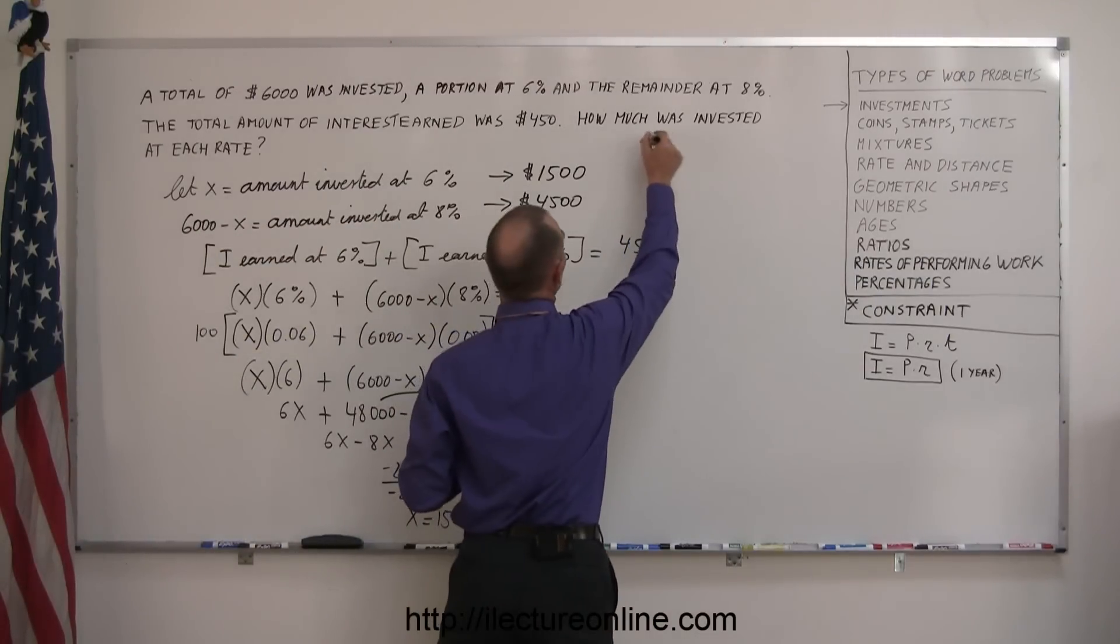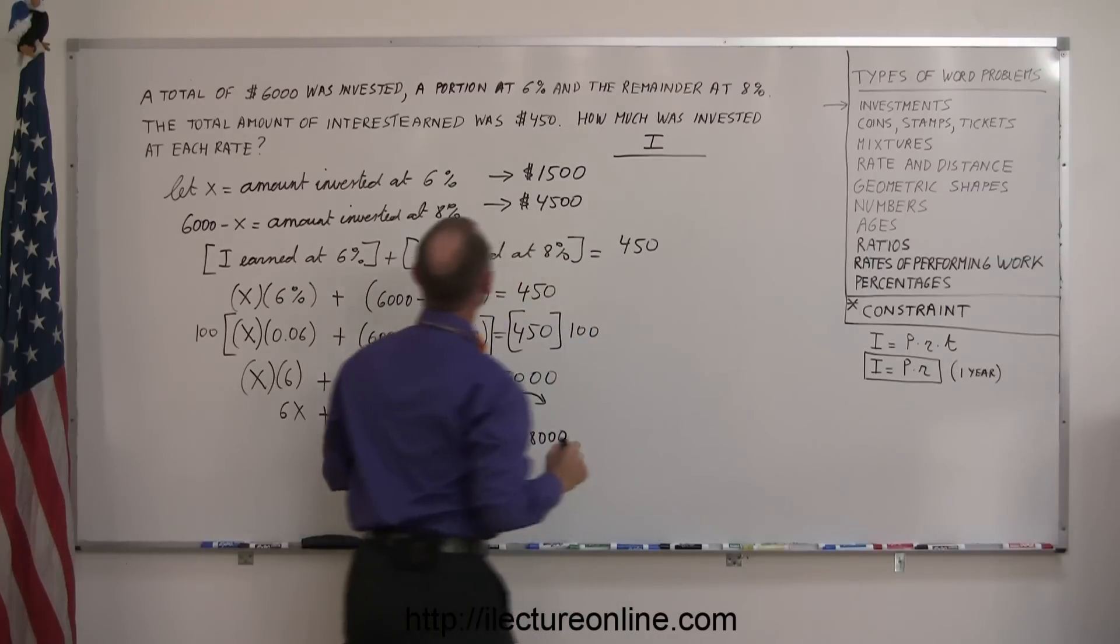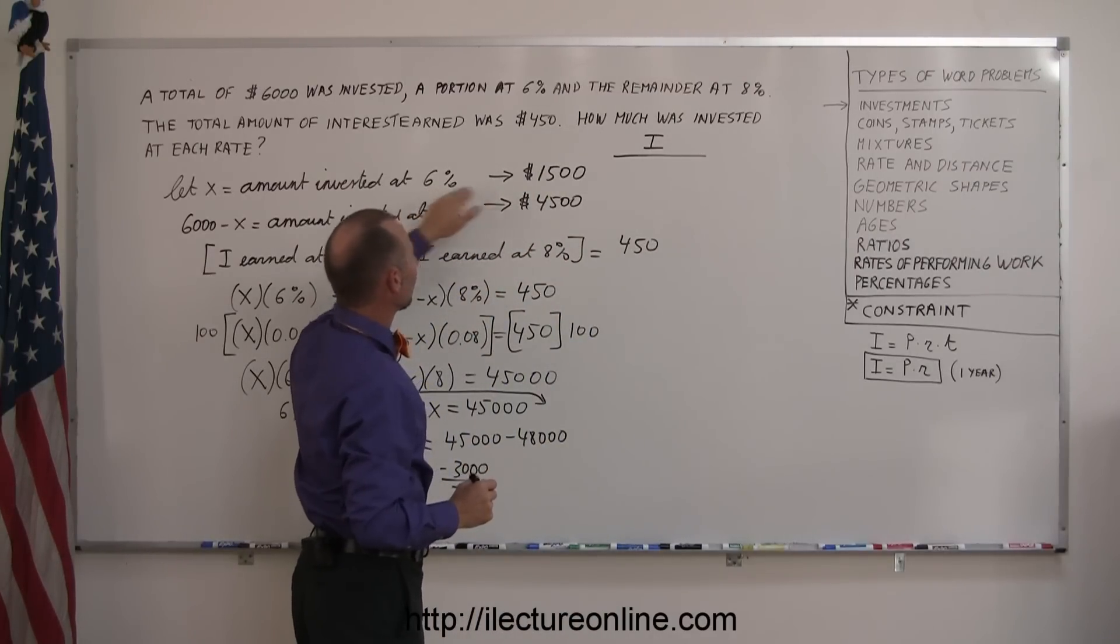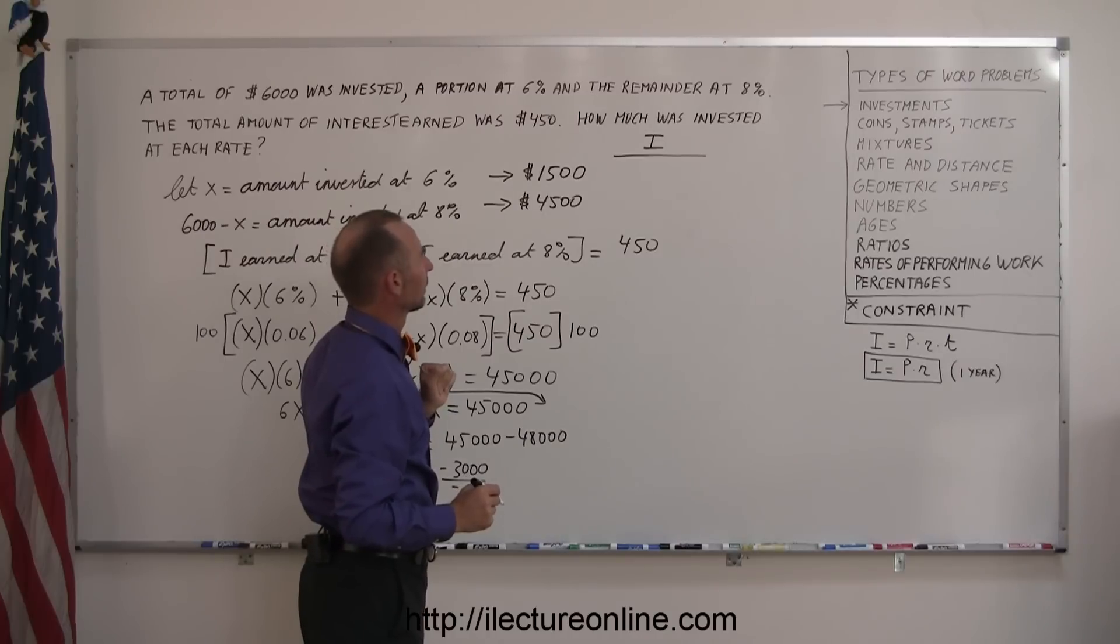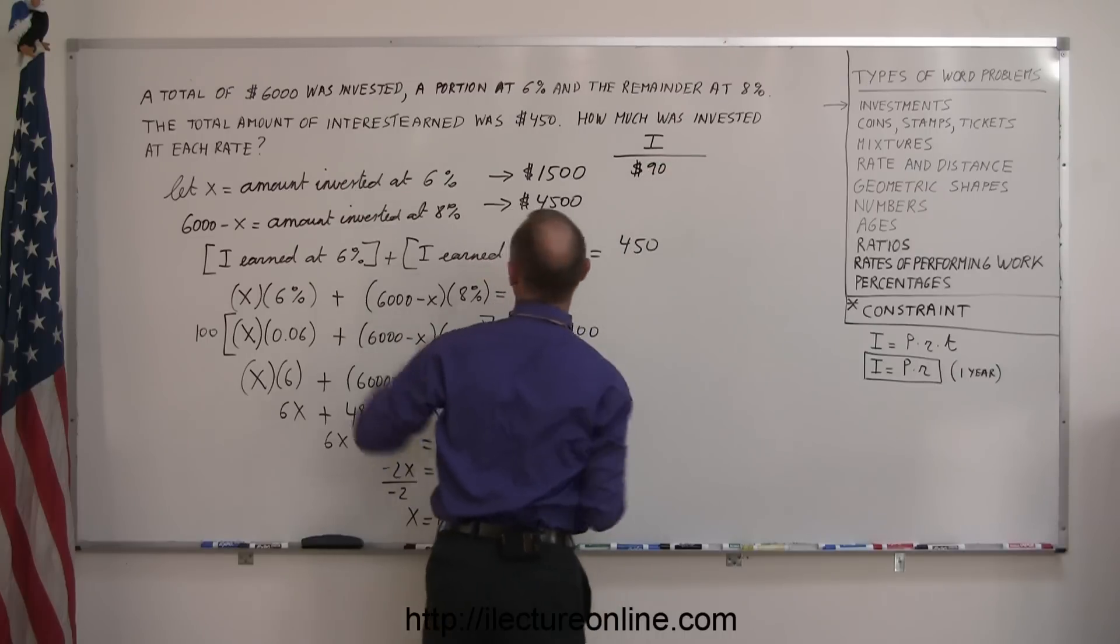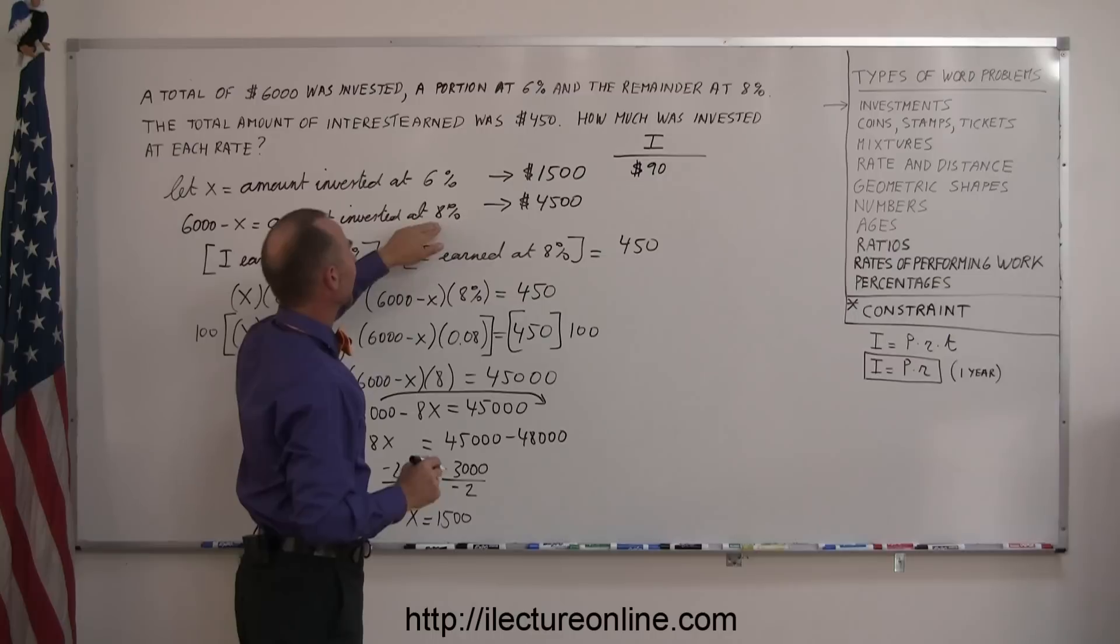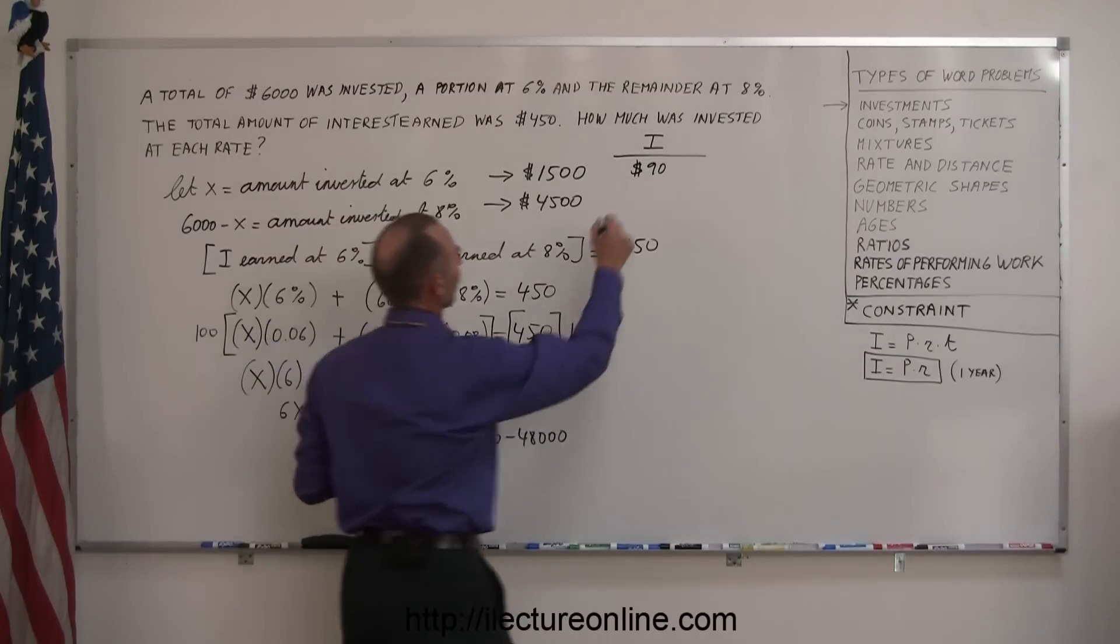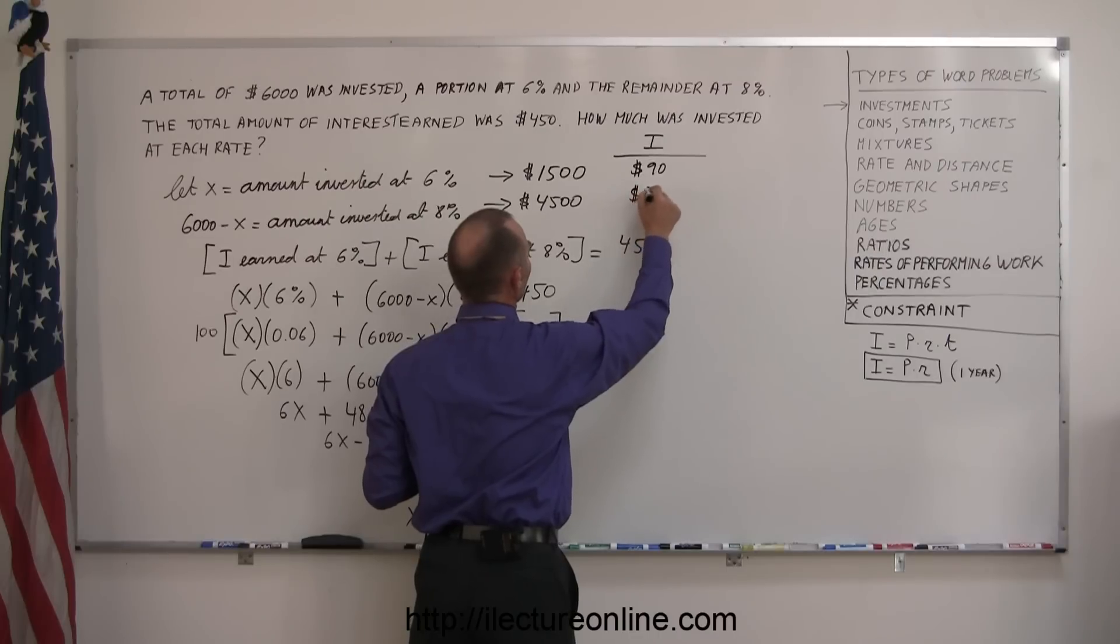And now just to make sure we didn't make any mistakes, how much interest did we earn in each case? Okay, if I invest $1,500 at 6%, that will earn me $90. And if I invest 4,500 at 8%, that gives me $360.